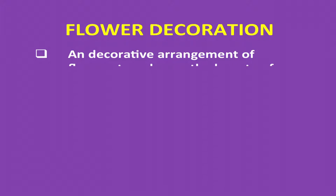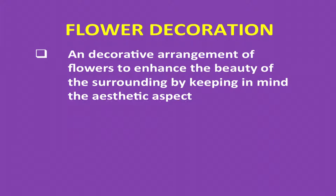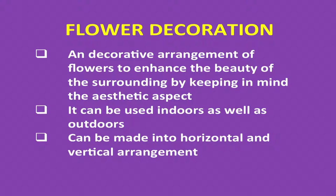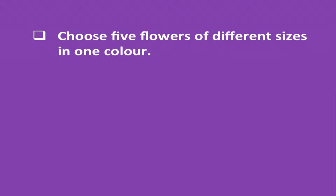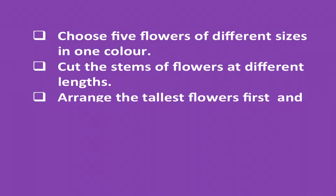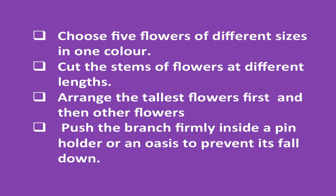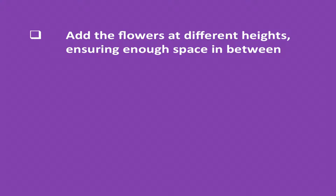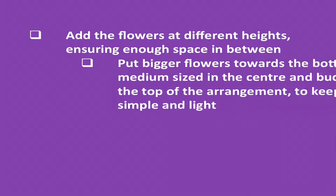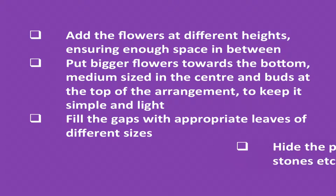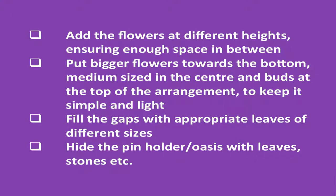Flower decoration is a decorative arrangement of flowers to enhance the beauty of the surrounding by keeping in mind the aesthetic aspect. It can be used both indoors as well as outdoors, in horizontal as well as vertical arrangements depending upon the purpose and function for which it is being used. Choose five flowers of different sizes in one color. Cut the stems at different lengths. Arrange the tallest flower first, then other flowers. Push the branch firmly inside a pin holder or oasis to prevent it from falling. Add flowers at different heights ensuring enough space in between so there is no clutter. Put bigger flowers towards the bottom, medium size in the center, and buds at the top to keep it simple and light. Fill the gaps with appropriate leaves of different sizes, and hide the pin holder and oasis with leaves, stones, or any other material.